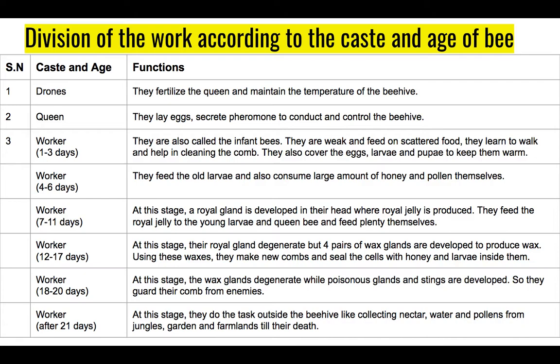From twelve to seventeen days, the royal gland degenerates and disappears, but four pairs of wax glands are produced. These wax glands produce wax, which is used to make new combs and seal damaged cells with honey and larvae inside them. At eighteen to twenty days, the wax glands also degenerate.